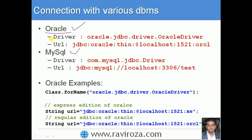When you are doing connection with Oracle, the driver name to be loaded is oracle.jdbc.driver.OracleDriver. This is the class which is to be loaded in the JVM before you make a connection with your Oracle database, and it is used inside Class.forName() as a string parameter.